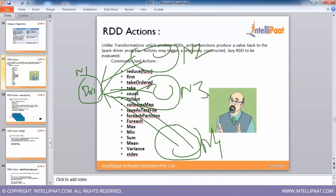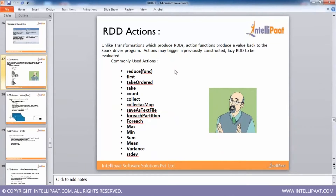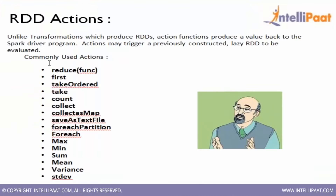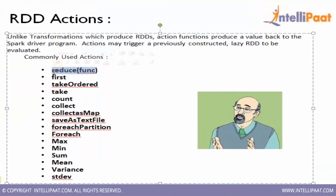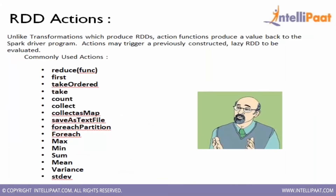When you execute an action, only then does the actual evaluation happen — that's called lazy evaluation. Commonly used actions include: reduce, take, takeOrdered, count, collect, saveAsTextFile, foreach, foreachPartition, max, min, sum, mean, variance, and standard deviation.